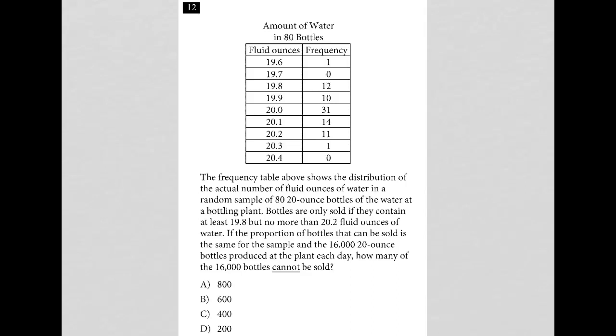So this question provides us with a table, right? I'm going to treat this as a diagram question. This table has a couple of columns. The first column is fluid ounces. The second column is frequency. The title here is amount of water in 80 bottles. And then we have these fluid ounces amounts per row and the frequency with which you find that amount of volume of water in bottles.